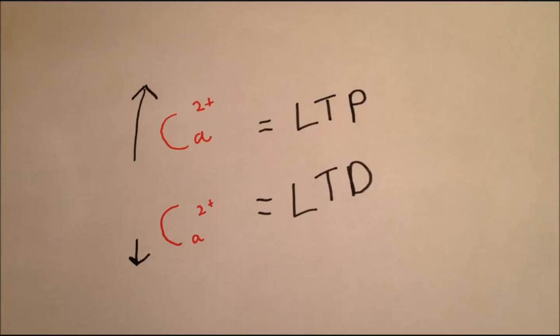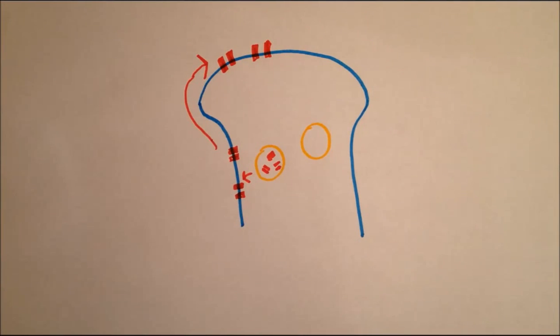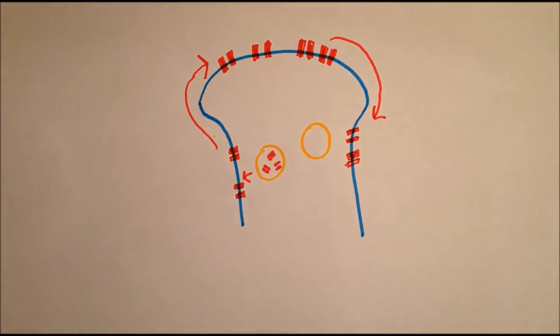But how does this happen? In the cell, AMPA receptors are constantly being recycled. New ones are undergoing exocytosis onto the perisynaptic sites, where they then migrate to postsynaptic areas. And receptors at the postsynaptic areas are migrating to the perisynaptic sites, where they undergo endocytosis and are brought back into the cell. Endosomes inside the neuron are thought to contain a pool of AMPA receptors.